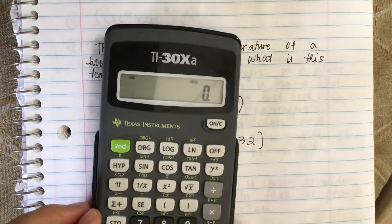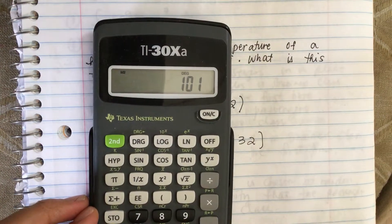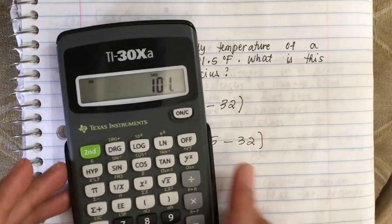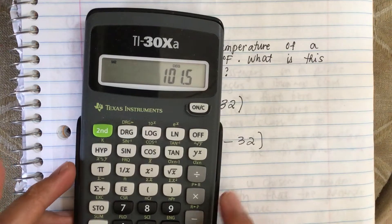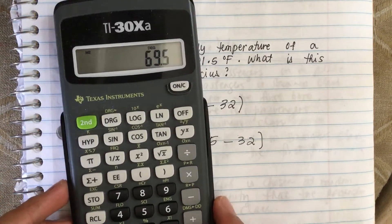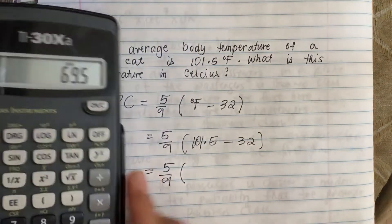So we have 101.5 minus 32, it's equal to 69.5.